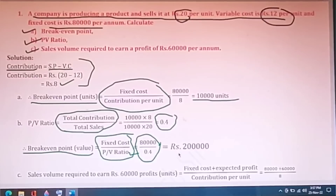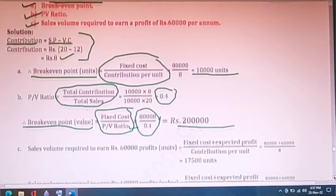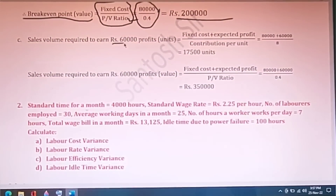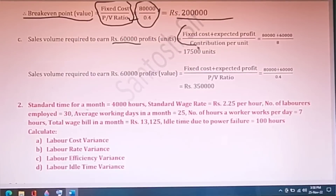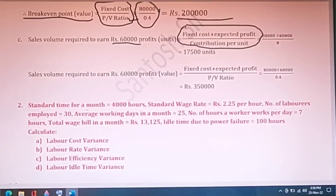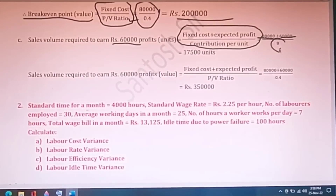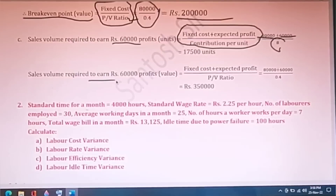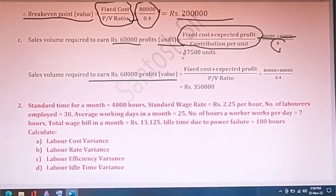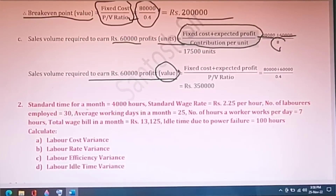Dividing fixed cost by PV ratio gives break-even point in value of Rs.2,00,000. For sales volume required to earn Rs.60,000 profit, the formula is (fixed cost plus desired profit) divided by contribution per unit: (80,000 plus 60,000) divided by 8 gives the required units. For sales volume required in value, divide by PV ratio. Remember: whenever value is required, always divide by PV ratio. This is simple and very mark-fetching — do not skip it.